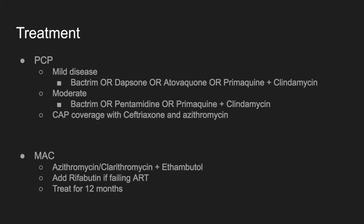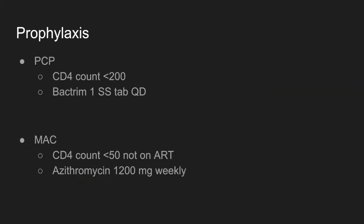Treatment for PCP includes Bactrim, and you'd also want to cover for regular pneumonia with ceftriaxone and azithromycin. MAC treatment includes azithromycin and ethambutol for a duration of 12 months. For prophylaxis: PCP patients with a CD4 count of less than 200 get single-strength Bactrim daily. If the CD4 is less than 100, use double-strength Bactrim to also cover toxo. MAC prophylaxis with a CD4 less than 50 not on antiretroviral therapy is once-weekly azithromycin.